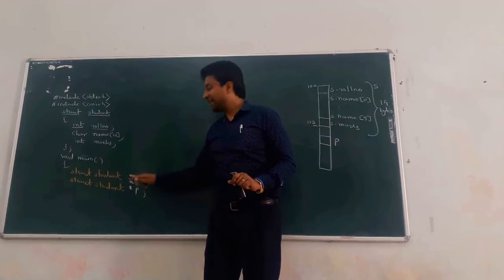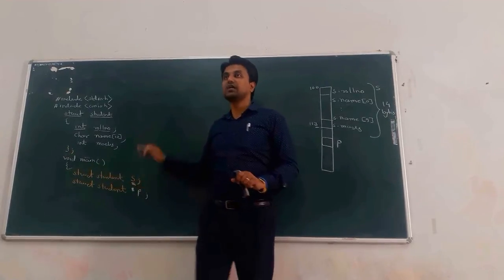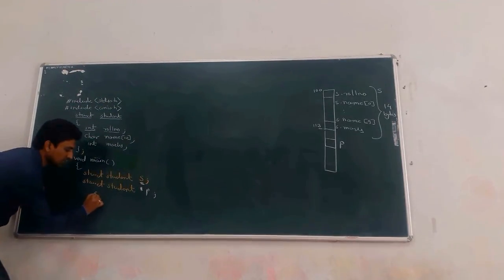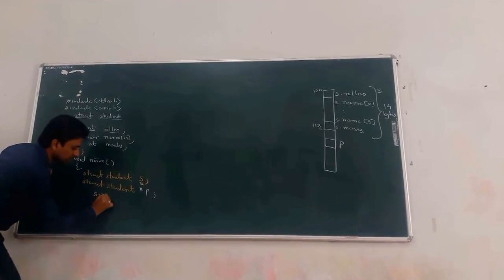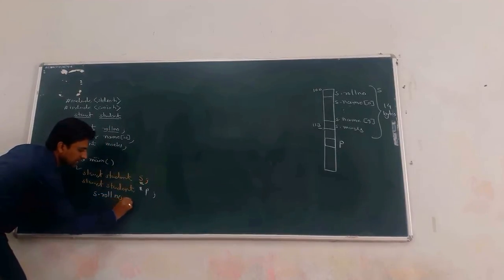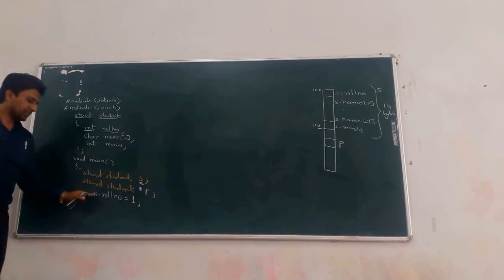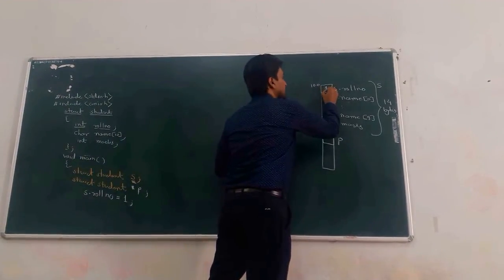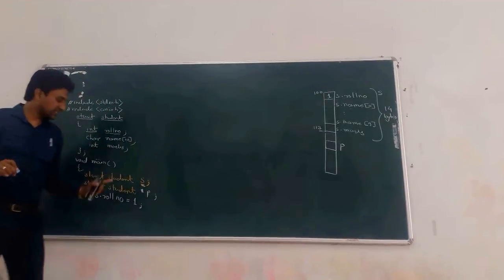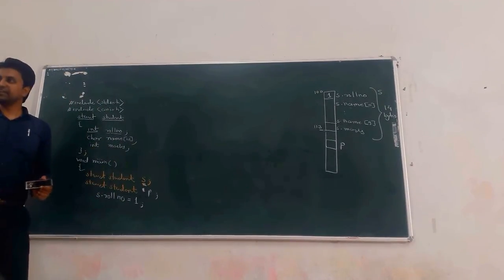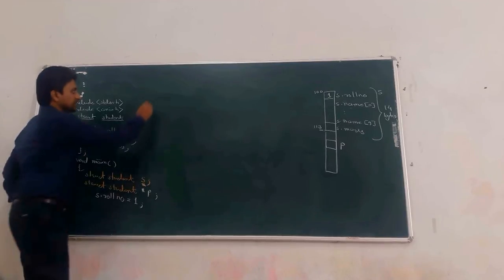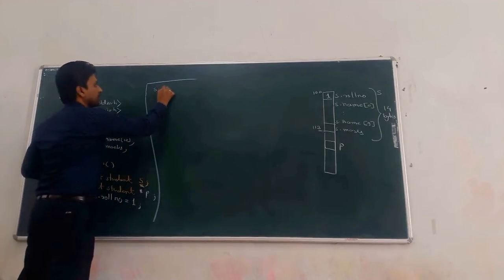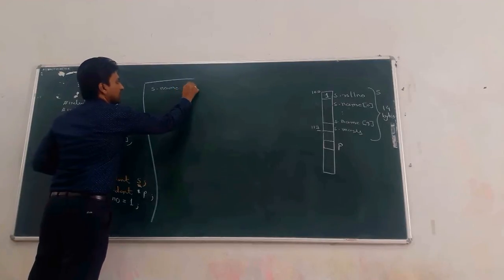We can assign values to the structure's value variable at compile time. For example: S.rollnumber = 1 — this value is directly assigned in memory at compile time. We cannot take the value from the user this way. Next, S.name is assigned the value "xyz" — this string value is directly stored in memory, ending with the null character '\0'.